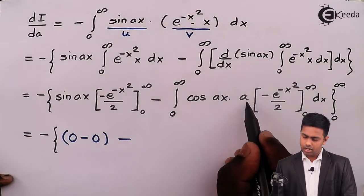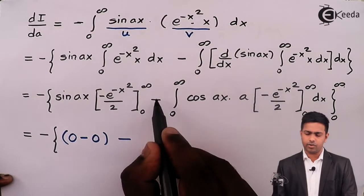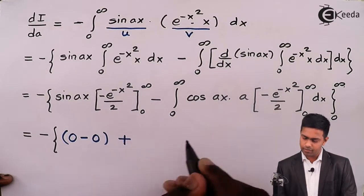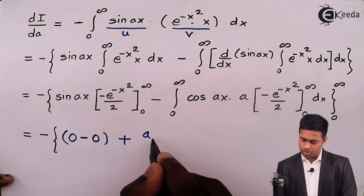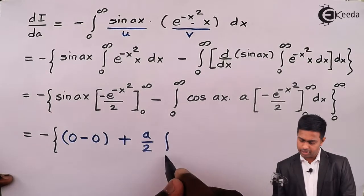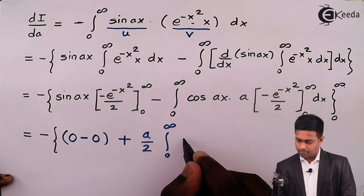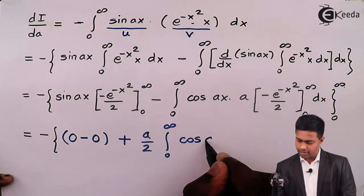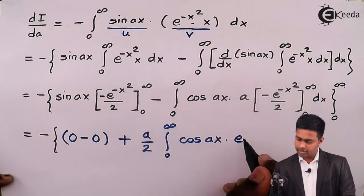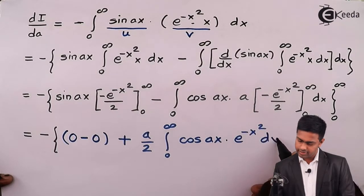Taking a/2 and the negative sign outside — minus times minus becomes positive — so we get a/2 outside, and inside we have the integral from 0 to infinity of cos(ax) · e^(-x²) dx.